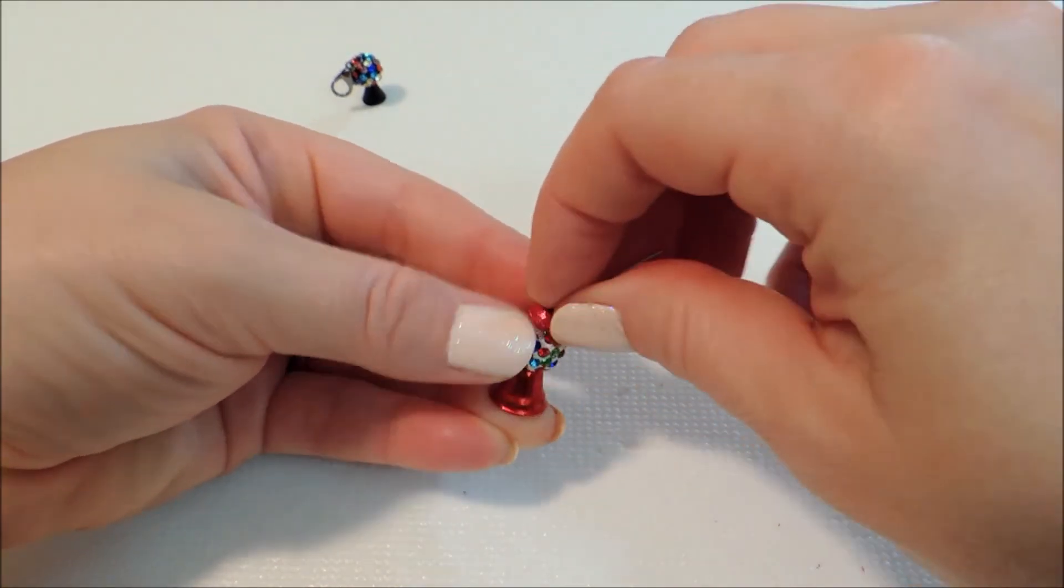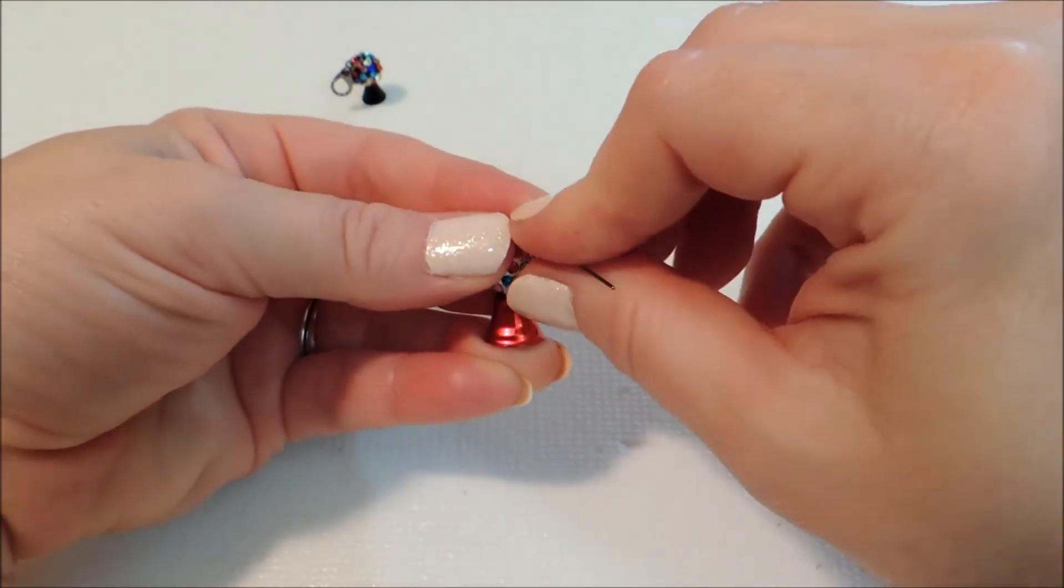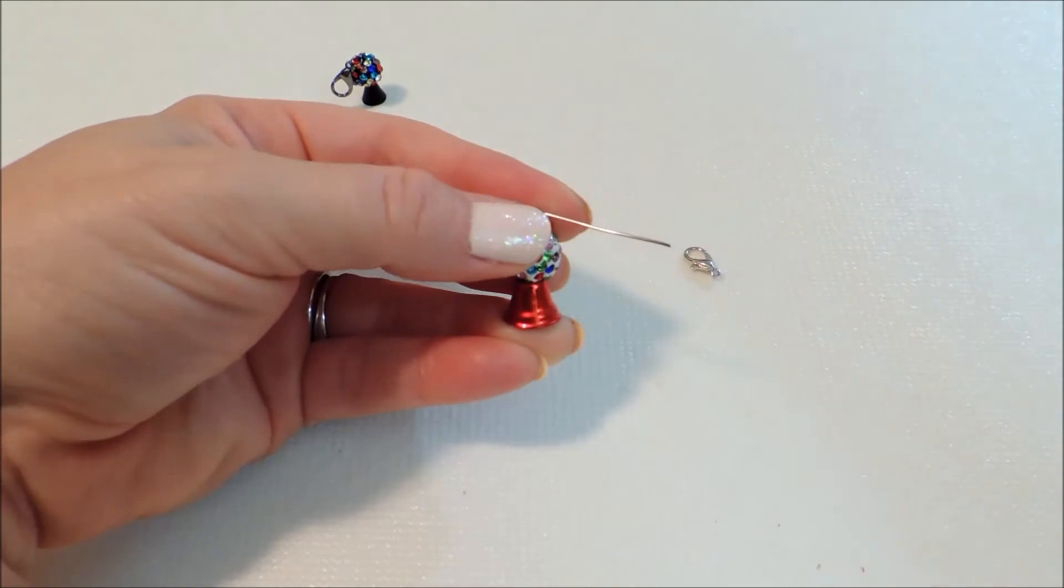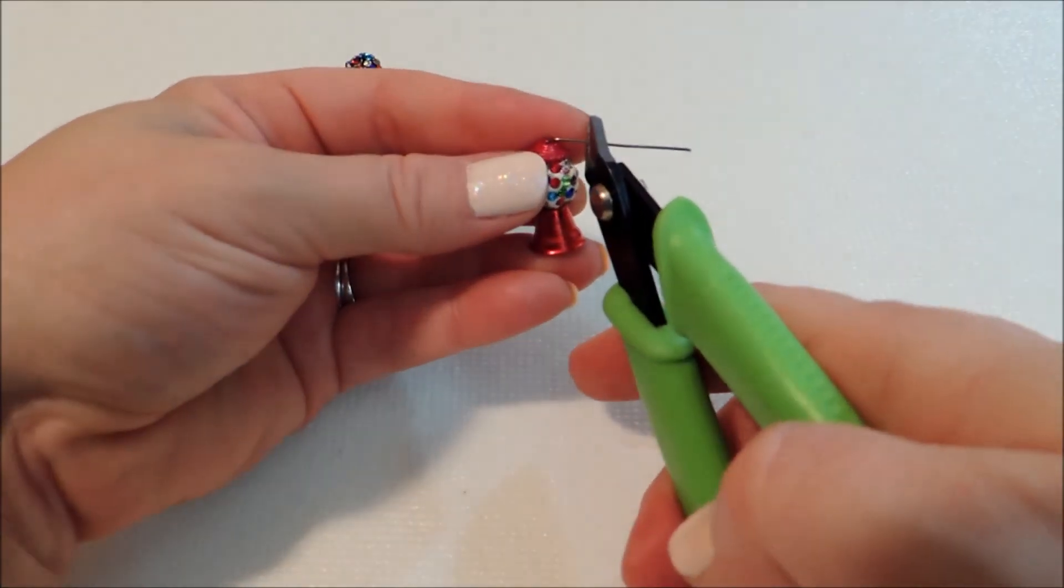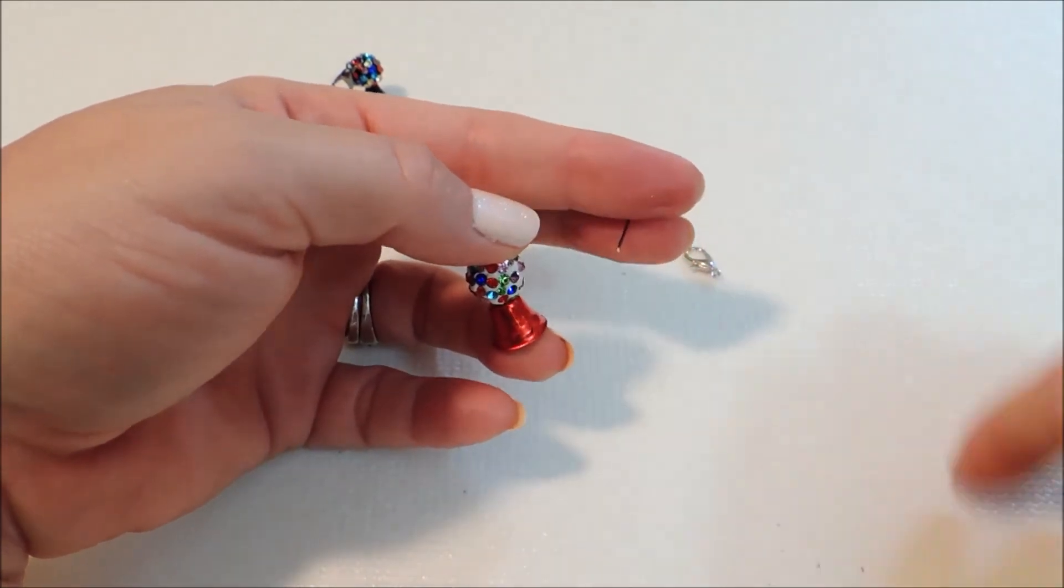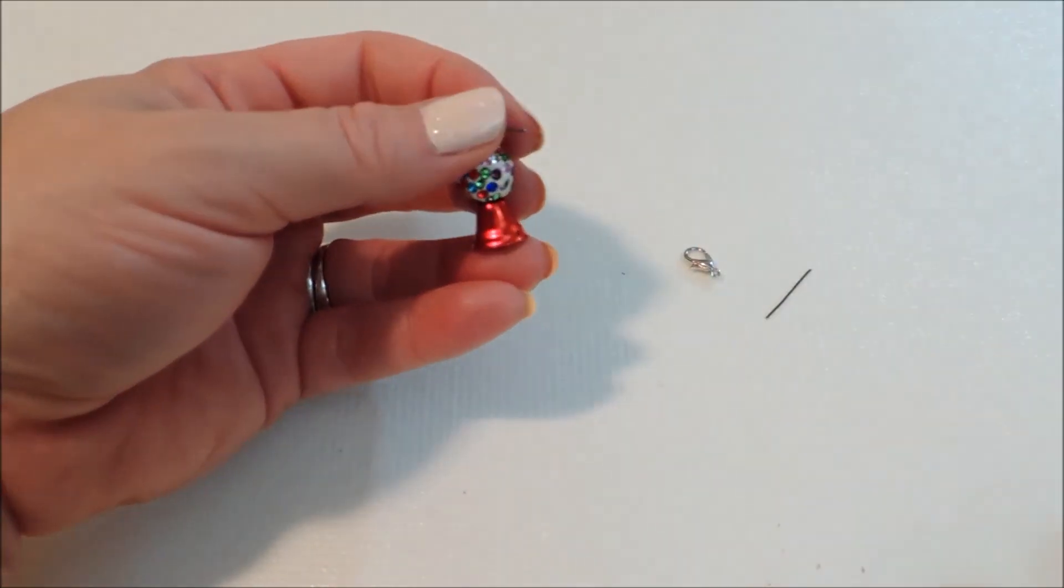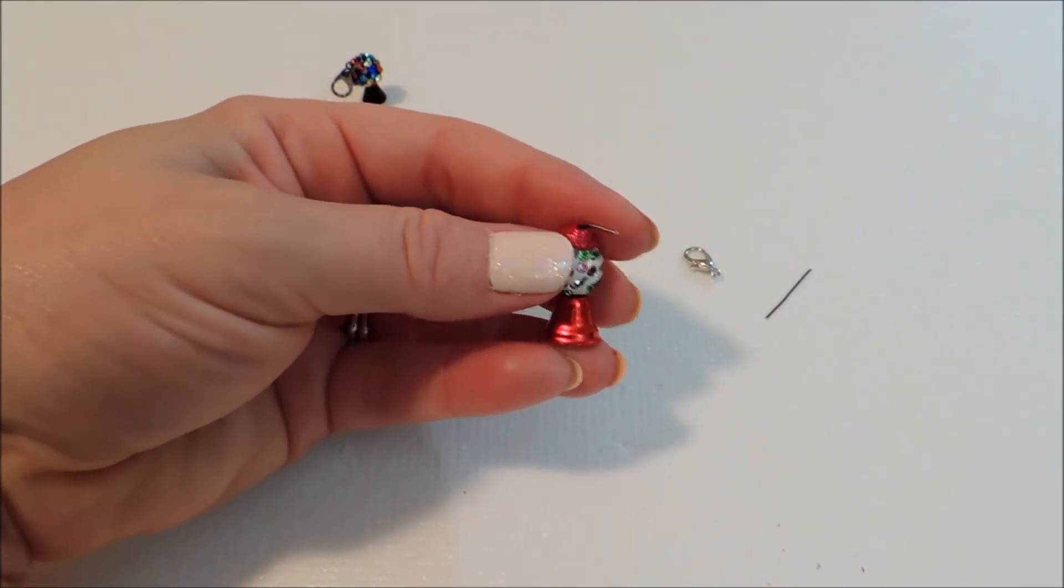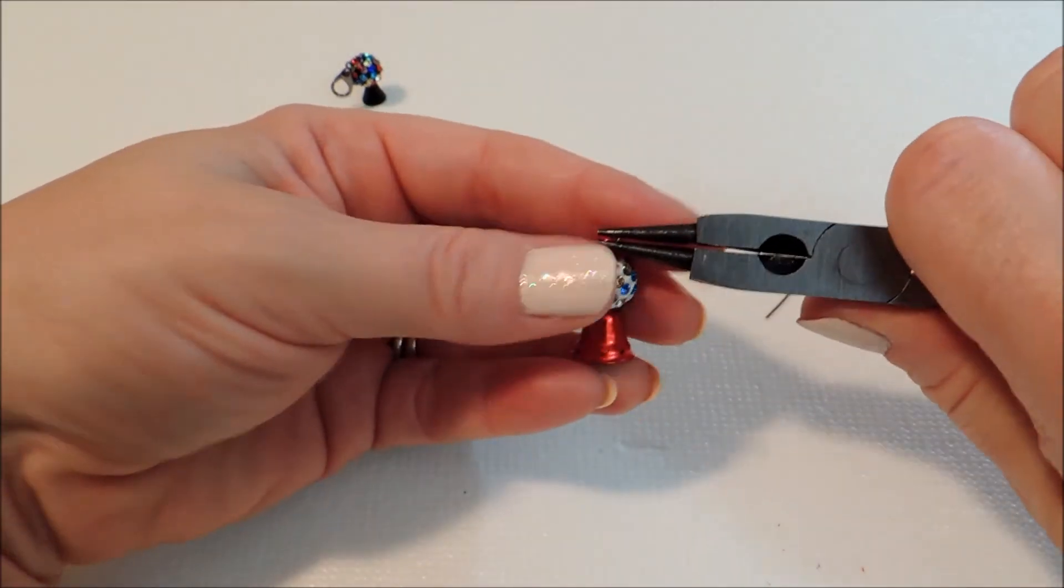Then we just hold everything firmly together and bend our head pin over at a 90 degree angle, cut that down to about a quarter of an inch, and roll that into a loop.